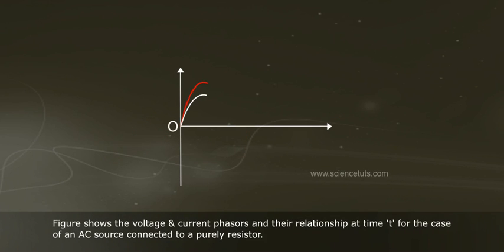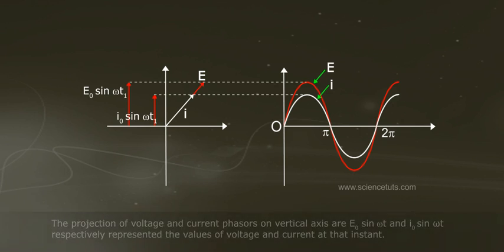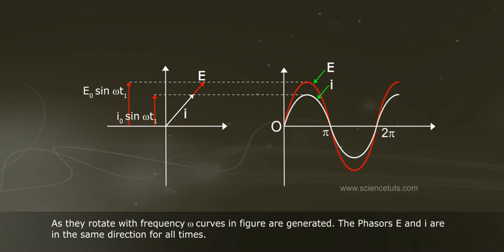Figure shows the voltage and current phasors and their relationship at time t for the case of an AC source connected to a purely resistive load. The projection of voltage and current phasors on vertical axis, E₀ sin ωt and I₀ sin ωt respectively, represent the values of voltage and current at that instant. As they rotate with frequency ω, curves in figure are generated.